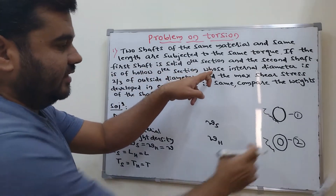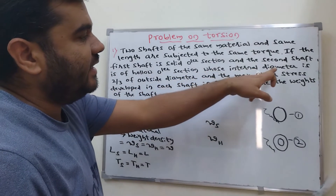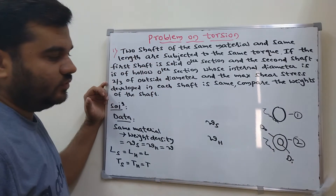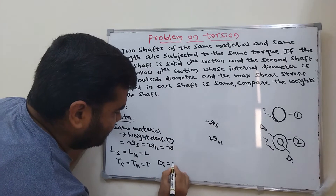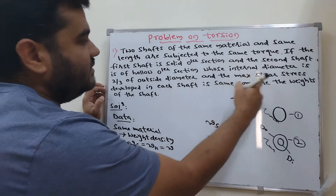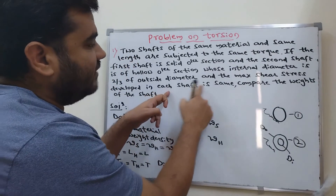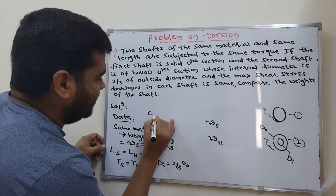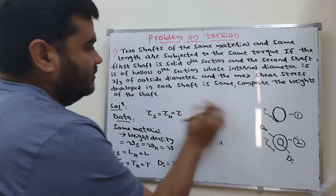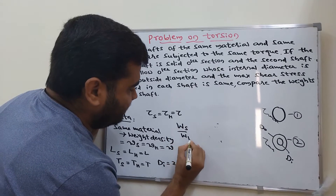The first shaft (suffix s) is a solid circular section and the second shaft (suffix h) is hollow circular section. The internal diameter is D_i and the outside diameter is D_o. Internal diameter is two-thirds of external diameter. Maximum shear stress developed in solid shaft equals shear stress in hollow shaft equals tau_max.